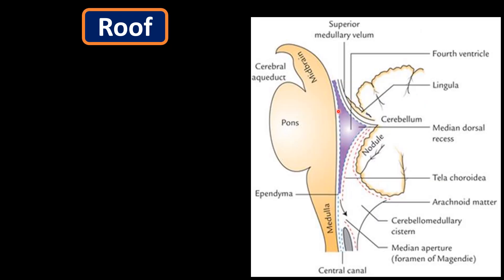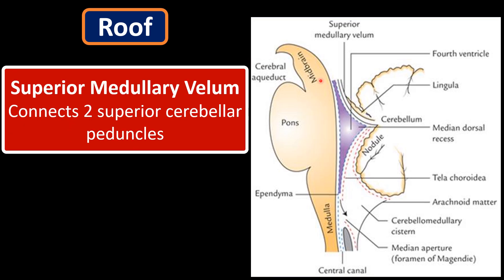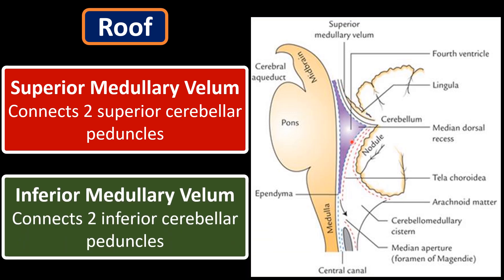The roof of the fourth ventricle is contributed by the superior medullary velum — which connects the two superior cerebellar peduncles — and the inferior medullary velum, which connects the two inferior cerebellar peduncles.